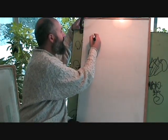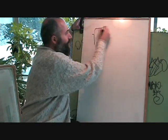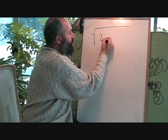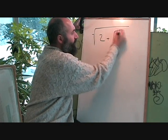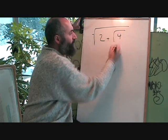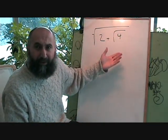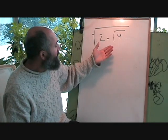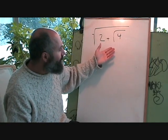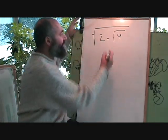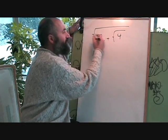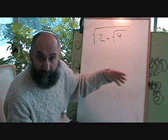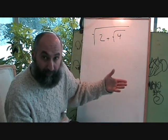So for example, if you had the square root of 2 plus the square root of 4, that's a typical type of problem. These are really simple, but for some reason having a square root symbol inside a square root symbol really throws people off.